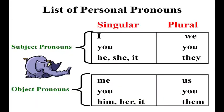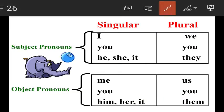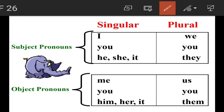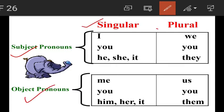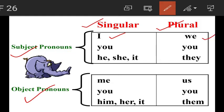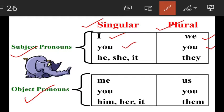Personal pronouns are divided into subject pronouns and object pronouns, both singular and plural. Subject pronouns — first person: singular I, plural we; second person: singular you, plural you; third person: singular he, she, it; plural they. These are used as the subject of the sentence.